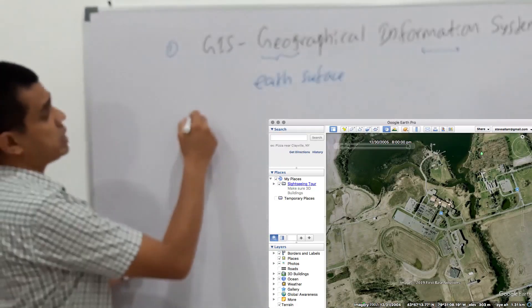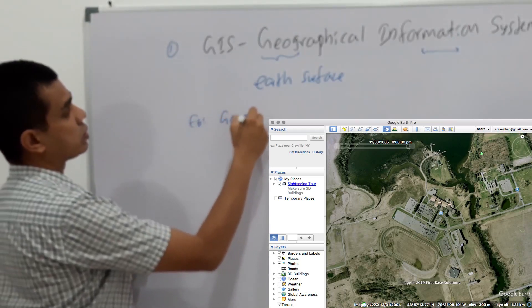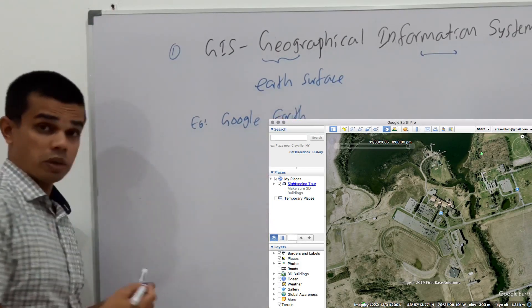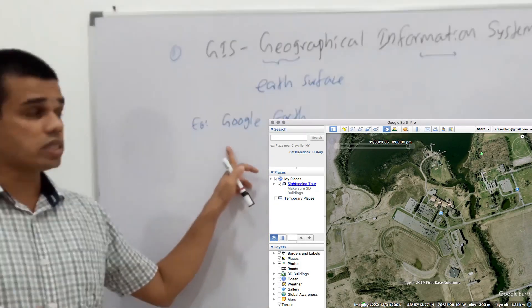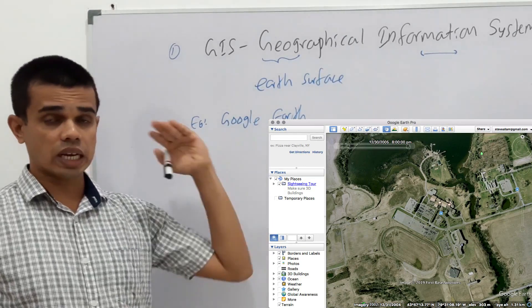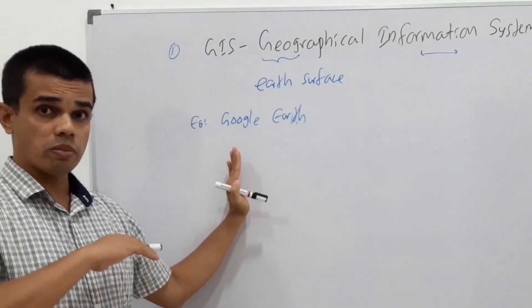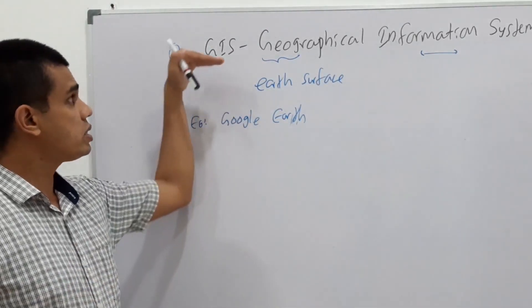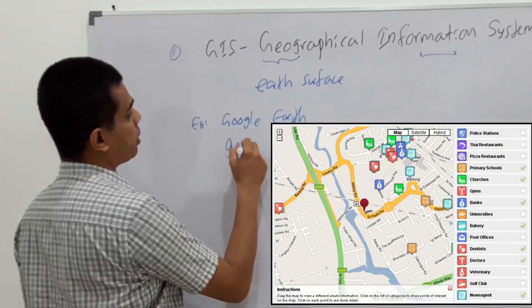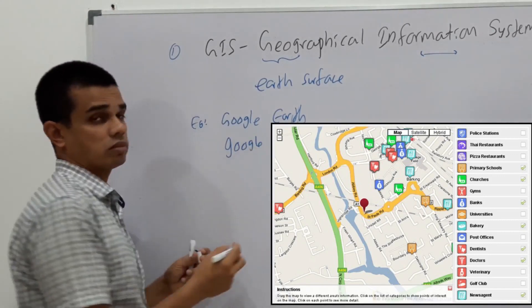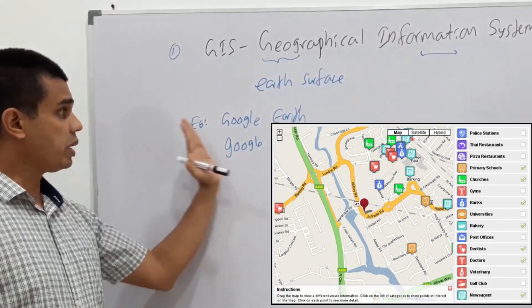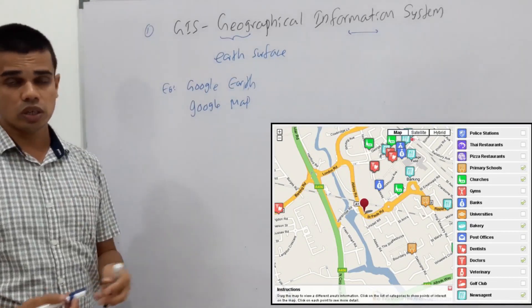The best example for GIS is Google Earth. Most of the people in today's world are using Google Earth. We know that even you can access that. It gives you satellite images of the ground. Sometimes it gives you the map. This is a type of GIS.